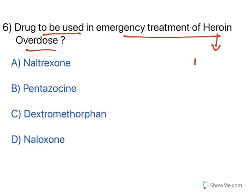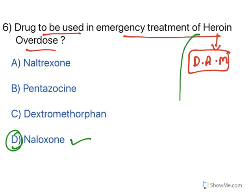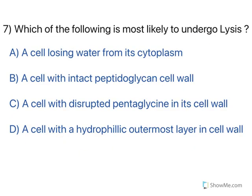Drug to be used in emergency treatment of heroin overdose: heroin is diacetylmorphine. For all opioid toxicity, the only antidote is naloxone — whether it is morphine, heroin, or any opioid. Naloxone is an antagonist that blocks the receptor and nullifies the effects of opioids.